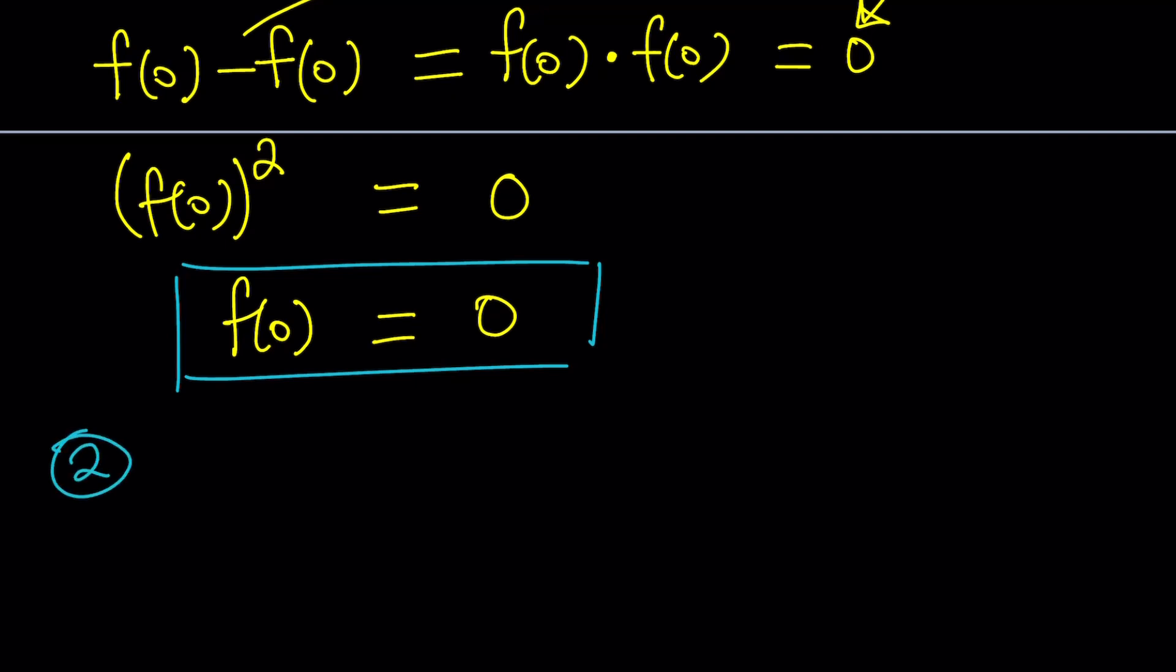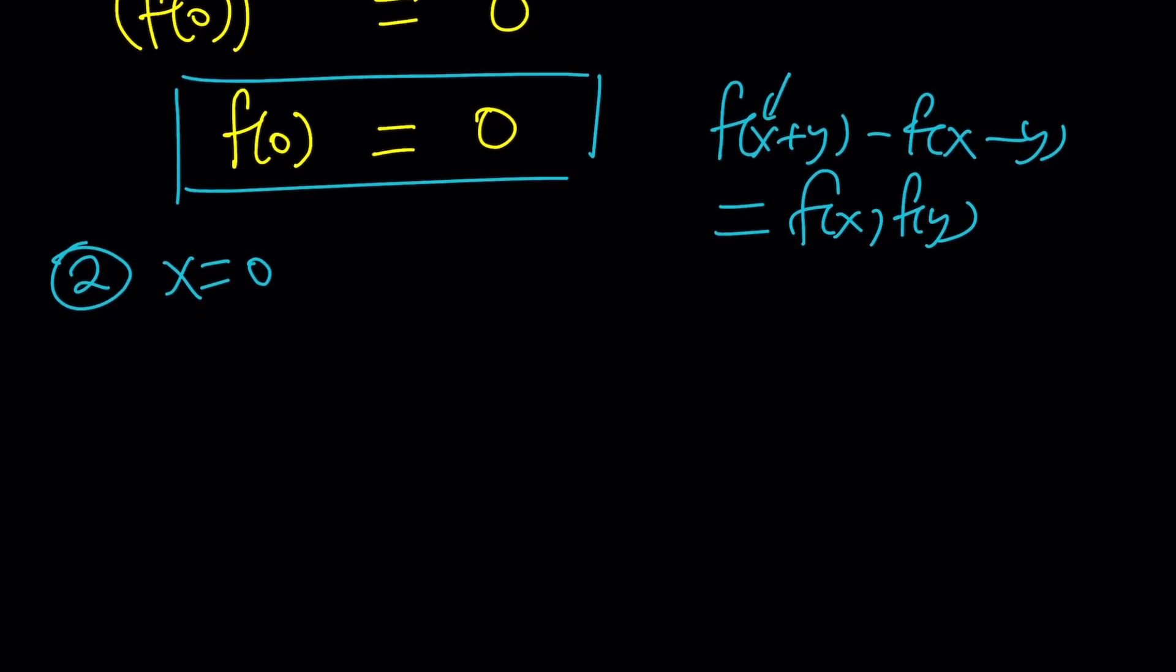Again, I'm going to write down the equation. f of x plus y minus f of x minus y equals f of x times f of y. We're going to replace x with 0 again. But this time, we're going to leave the y alone. Just leave it alone. So if you do that, only the x will be affected. So you're going to get f of 0 plus y, which is f of y, minus f of 0 minus y, which is f of negative y.